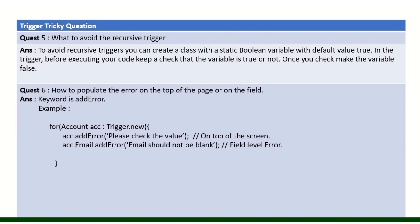How can you avoid a recursive trigger? You can create a class with a static boolean variable, or add one to an existing class. Initially it is set to false; once the trigger executes, it flips to true. Because it is a static variable, its value is maintained throughout the complete transaction, and through that we can prevent the trigger from firing recursively.